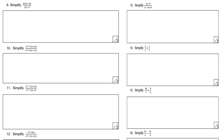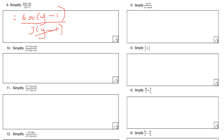This next one: factorise the numerator and denominator separately. Taking 6x as a common factor gives 6x(y minus 1) on top. On the denominator, factoring out 3 — the highest common factor of 3y and minus 3 — gives 3(y minus 1). Cancel top and bottom by (y minus 1): 6x divided by 3 equals 2x, so the final answer simplifies to 2x.